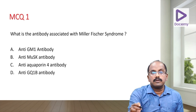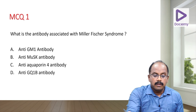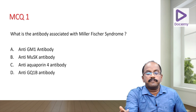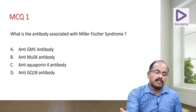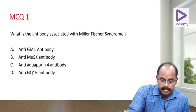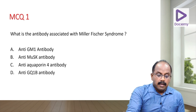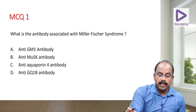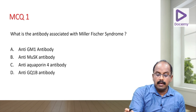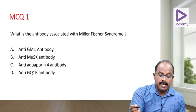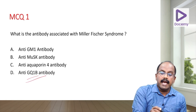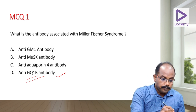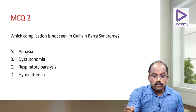A commonly asked MCQ: Which antibody is associated with Miller Fisher Syndrome? The choices include anti-GM1 ganglioside, anti-GM1 antibody, MUSK antibody, aquaporin-4 antibody, and anti-GQ1b. The correct answer is the anti-GQ1b antibody.